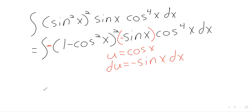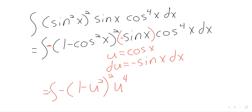Almost everything turns to u: one minus cosine squared becomes one minus u squared, all squared; cosine to the fourth of x is u to the fourth; and negative sine x dx turns into du. We have successfully gone from x's to u's.